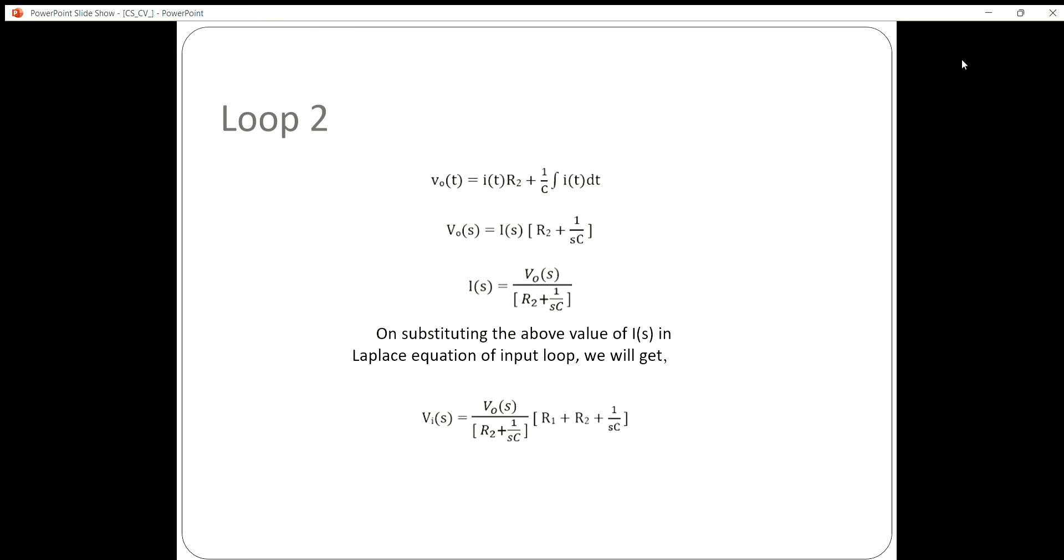Now coming to loop 2, where output voltage is given as I(t) × R2 + (1/C) ∫I(t)dt. This can be rewritten as I(s) × [R2 + 1/(sC)], and therefore we get the final equation as I(s) = V_out(s) / [R2 + 1/(sC)].